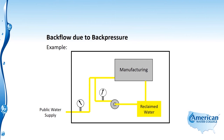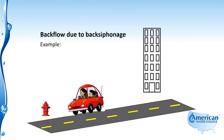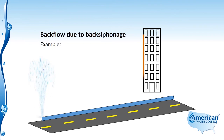Now we're going to take a look at backflow due to back siphonage. Here we have a young couple driving down the street — they take out a fire hydrant and cause a geyser in the street. This sudden flow of water out causes a drop in pressure in the system, which would cause a back siphonage condition from a high-rise building.